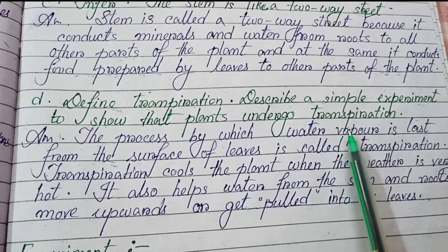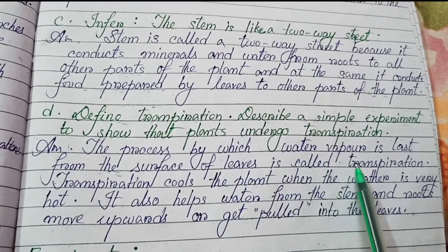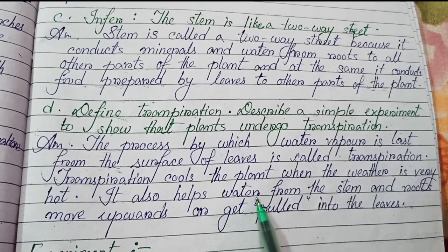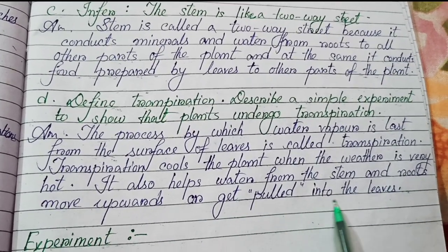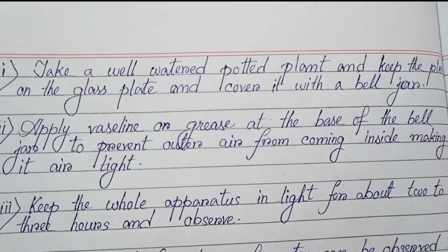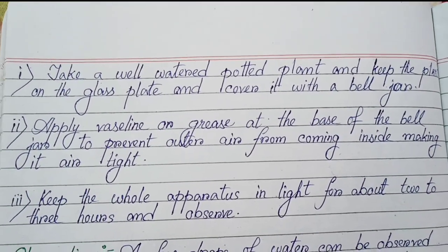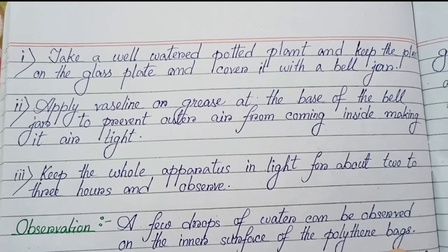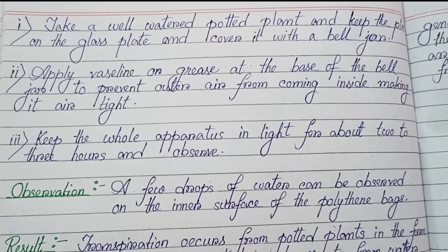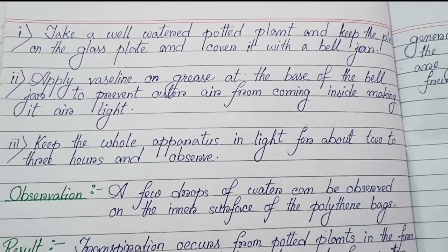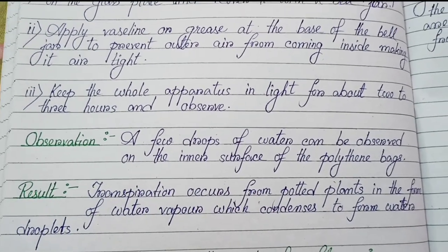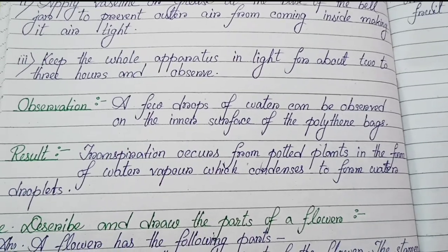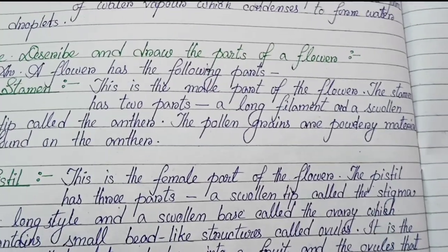Number (d): Define transpiration and describe a simple experiment to show that plants undergo transpiration. Transpiration is the process by which water vapor is lost from the surface of the leaves. It cools the plant when the weather is very hot and helps water from the stem and roots move upwards into the leaves. Experiment: (1) Take a well-watered potted plant and keep it on a glass plate and cover it with a bell jar; (2) apply vaseline or grease at the base of the bell jar to prevent outer air from coming inside, making it airtight; (3) keep the whole apparatus in light for about two to three hours and observe. Observation: a few drops of water can be observed on the inner surface of the bell jar. Result: transpiration occurs from potted plants in the form of water vapor, which condenses to form water droplets.